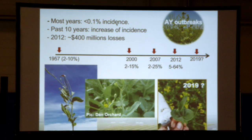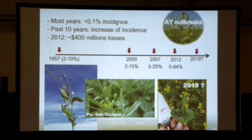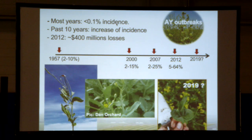Why are we studying Aster Yellows? It's not a big issue most years — most years it's less than 0.1% incidence. But some years there are major outbreaks. The first recorded outbreak was in 1957, with roughly 2 to 10% incidence depending on the field. Then in 2000, 2 to 15%; in 2007, 2 to 25%; and in 2012, between 5 and 60% of plants infected. Some fields in northern Saskatchewan near Meadow Lake had up to 80% incidence — a major, major problem.